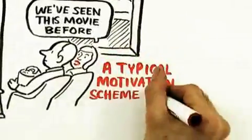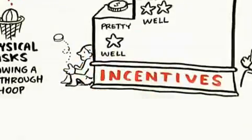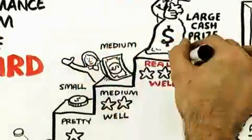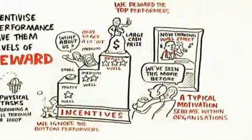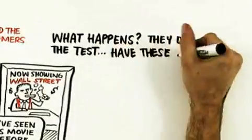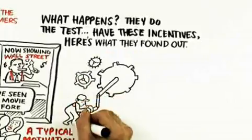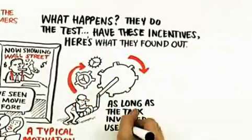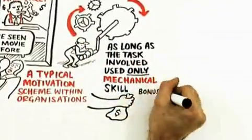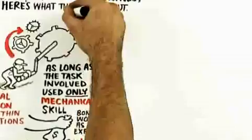We've seen this movie before. This is essentially a typical motivation scheme within organizations. We reward the very top performers, we ignore the low performers, and the other folks kind of in the middle get a little bit. So what happens? Here's what they found out: as long as the task involved only mechanical skill, bonuses worked as they would be expected - the higher the pay, the better their performance. That makes sense.